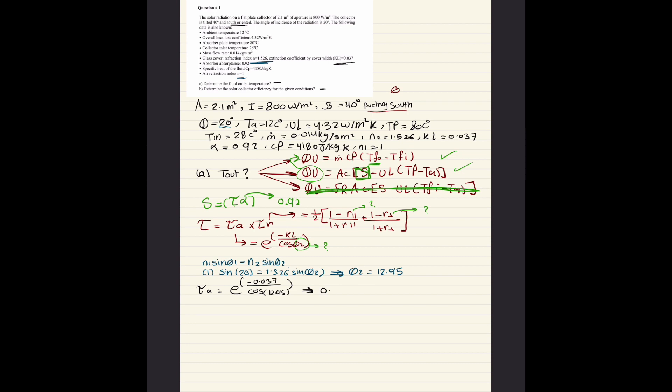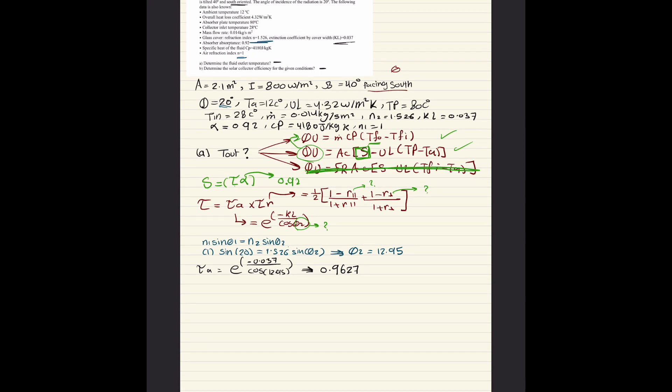Moving on to tau R. The equation for R parallel is tan squared of theta 2 minus theta 1 over tan squared of theta 2 plus theta 1. Plugging everything in, theta 2 is 12.95, theta 1 is 20, you get 0.0364. For R perpendicular it's similar but with sine: sine theta 2 minus theta 1 over sine theta 2 plus theta 1. We get an answer of 0.0509.